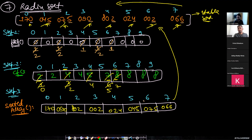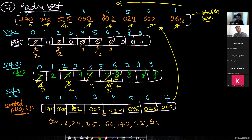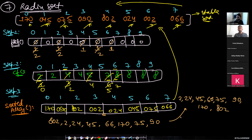For reference, after the second pass the result is: 802, 24, 45, 66, 170, 75, 90. After the third pass (since 802 is a three-digit number): 2, 24, 45, 66, 75, 90, 170. That's the final sorted array. The logic is simply applying counting sort repeatedly.